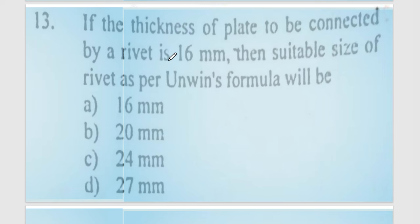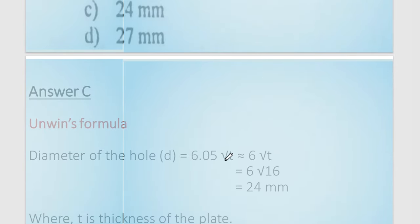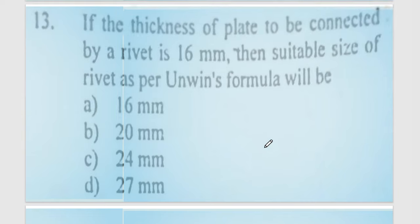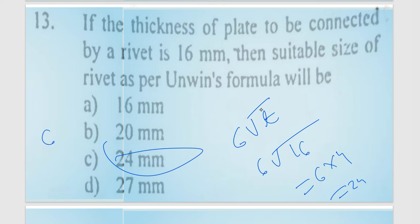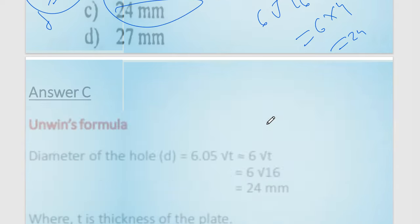Question number 13: if the thickness of the plate to be connected by rivet is 16 mm, find the suitable rivet size using Unwin's formula. Unwin's formula is: d = 6.05 × √t, where d is the diameter of the hole. Approximately: d = 6 × √16 = 6 × 4 = 24 mm. So the answer is 24 mm.